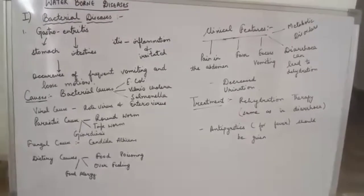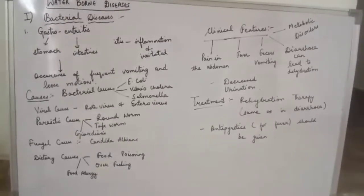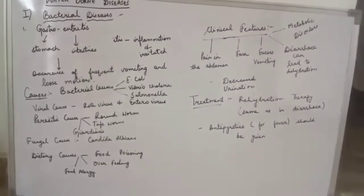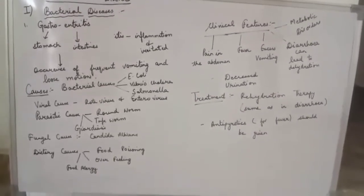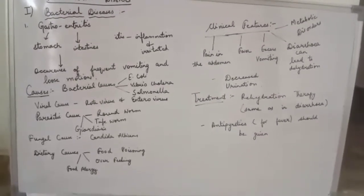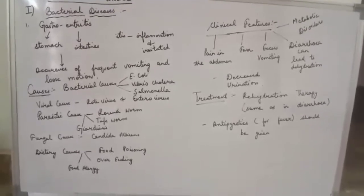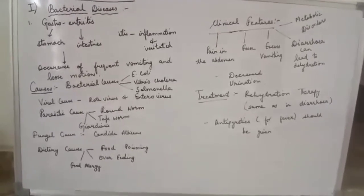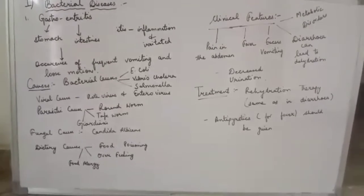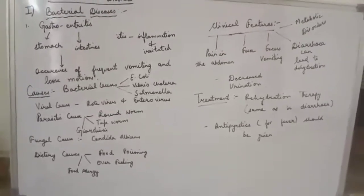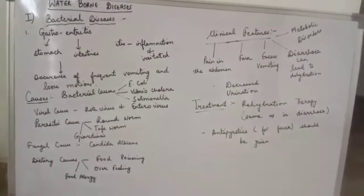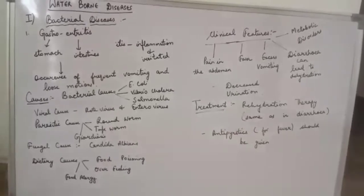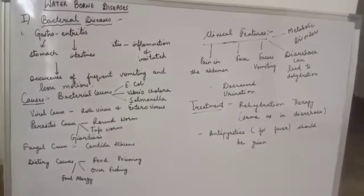Bacterial causes include E. coli, Vibrio cholerae, and Salmonella. Viral causes include rotavirus and enterovirus, which we will study later. Parasitic causes include roundworm, tapeworm, and giardiasis. Fungal causes include Candida albicans. Dietary causes include food poisoning, overfeeding, and food allergy.